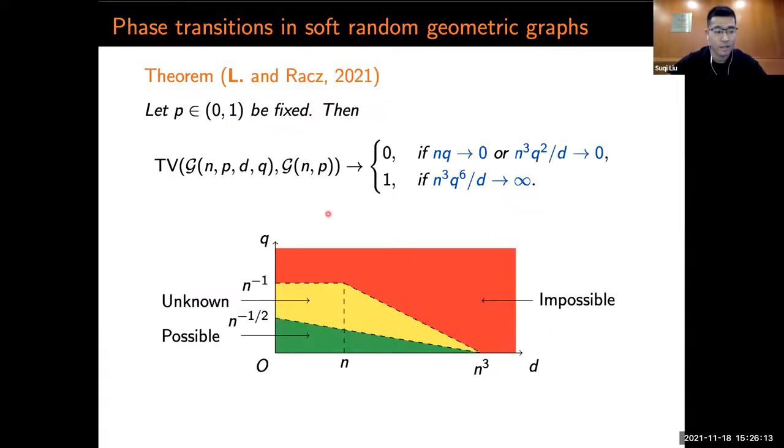The theorem can be visualized by the following phase diagram in the space of D and Q. In the red region, where the total variation distance goes to zero, detection is impossible. While in the green region, where the total variation distance goes to one, there is a computationally efficient statistic that can tell the difference. There is also a yellow region which is not covered by the theorem.